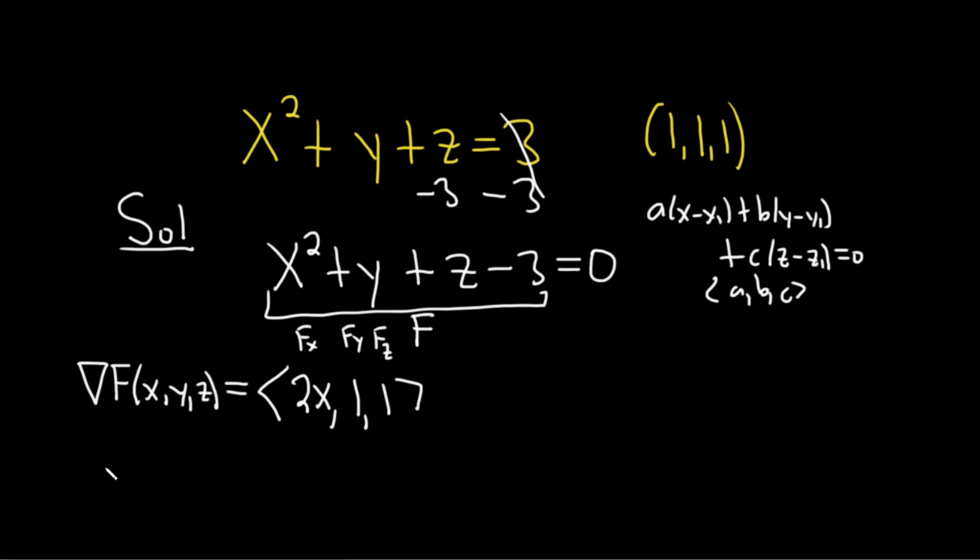We want the gradient at 1, 1, 1. So the gradient at 1, 1, 1 for the tangent plane at that point. While plugging in a 1 for x will just give us 2. So 2, 1, 1.